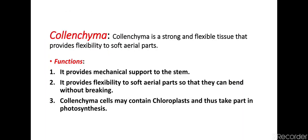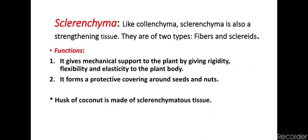The next type of simple permanent tissue is colenchyma. Colenchyma is a strong and flexible tissue that provides flexibility to soft aerial parts. It provides mechanical support to the stem and flexibility to aerial parts so that they can bend without breaking. Colenchyma cells may also contain chloroplasts and thus take part in photosynthesis.